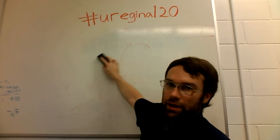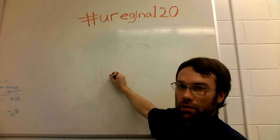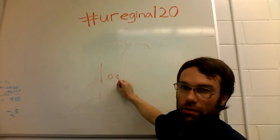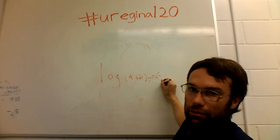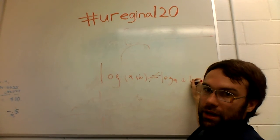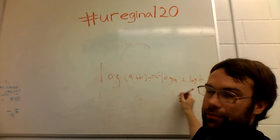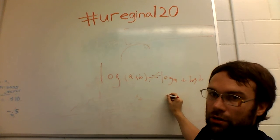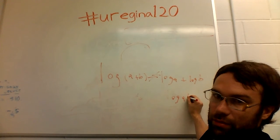One last point, something you'll probably get tripped up on all the time, is if you have log A plus B, not equal to log A plus log B. It does not work this way. However, log A plus log B is equal to something special, which is log AB, A times B.